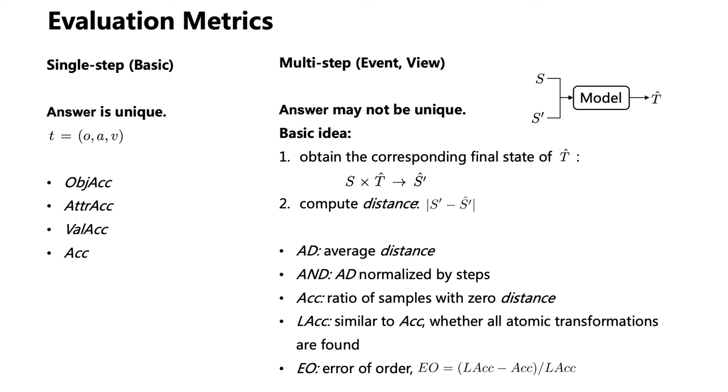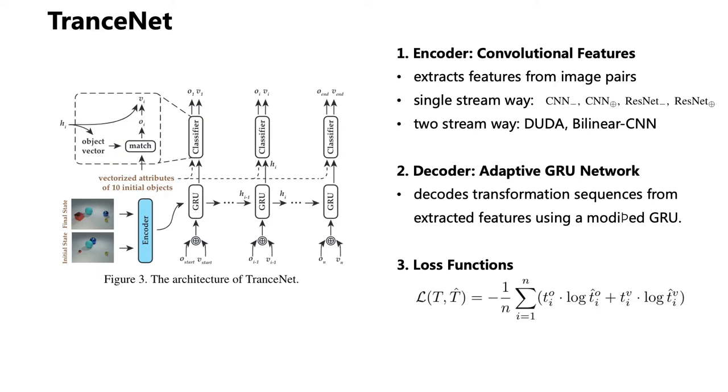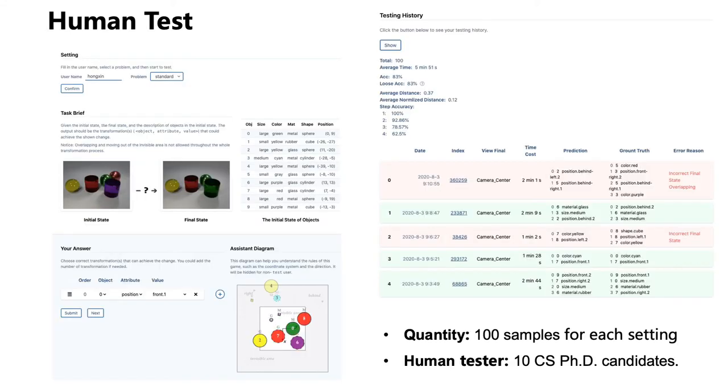To comprehensively measure the ability of transformation reasoning, we provide evaluation metrics from different perspectives for single-step and multi-step settings respectively. We benchmark six initial models under the proposed framework, and we also build a testing system to collect human results.